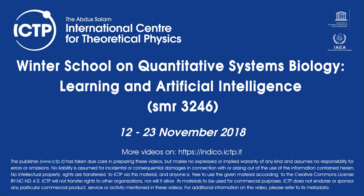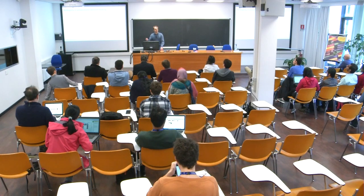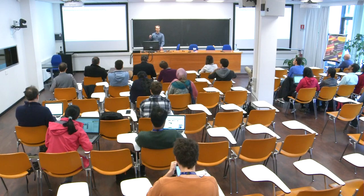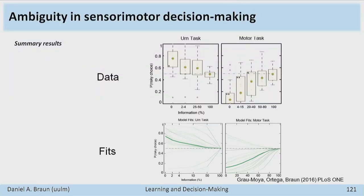People can hold seemingly contradictory beliefs when you change the utility function. The way to explain that is that because you have model uncertainty or ambiguity, you want to have robust beliefs, so you tend towards worst-case scenarios. Or if you're a gambler, the opposite — you tend to the positive side.